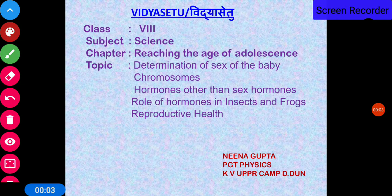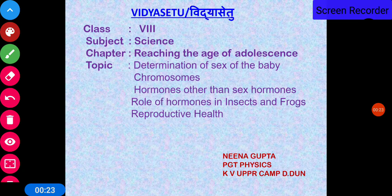Good morning to all. Let us complete the lesson on reaching the age of adolescence by covering the remaining topics of the chapter: determination of sex of the body, chromosomes, hormones other than sex hormones, role of hormones in insects and frogs, and reproductive health.